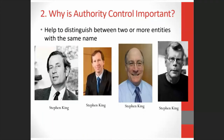The second reason authority control is important is sort of the opposite of the first — we're going to use authority control to help distinguish between two or more things with the same name. When you and I think of Stephen King, we probably think of the famous horror and suspense writer. But there are a lot of other Stephen Kings out there writing books. These four have all written books: the first is a marketing expert, the second writes about economics, the third is a communications professor, and the fourth is our scary horror writer.